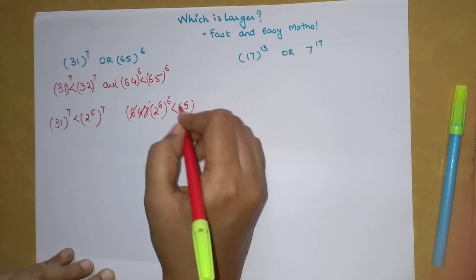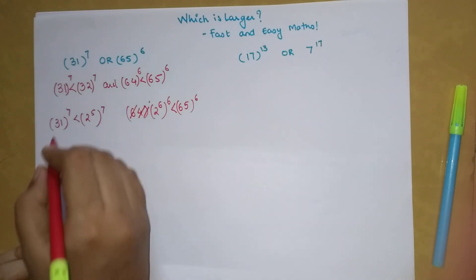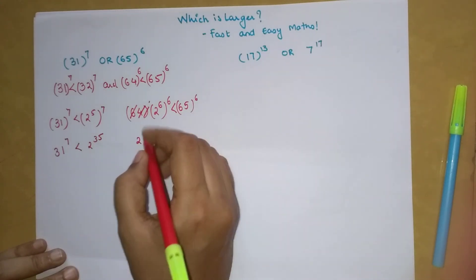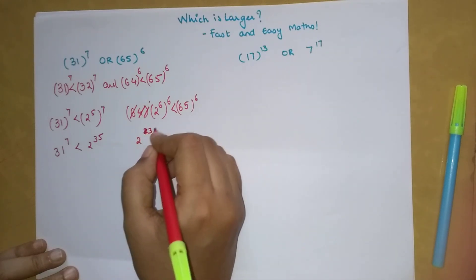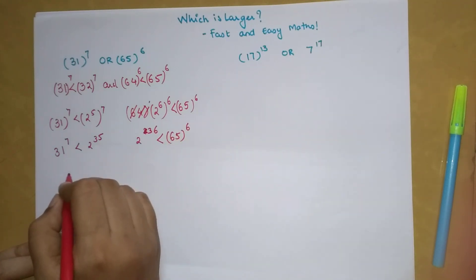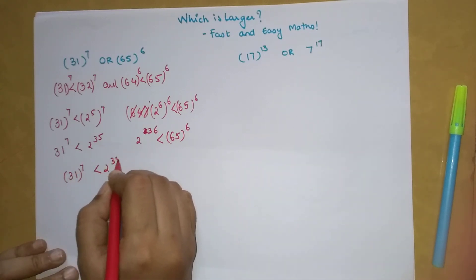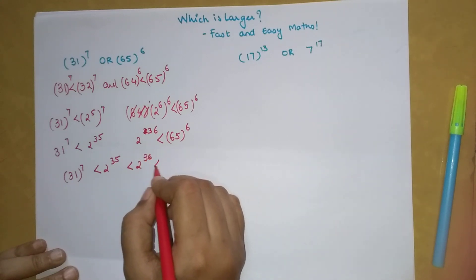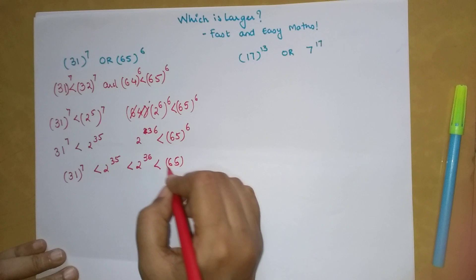Now we can write this as 31 raised to 7, and we can directly write that 31 the whole raised to 7 is less than 2 raised to 35, which is less than 2 raised to 36, and this is less than 65 the whole raised to 6.